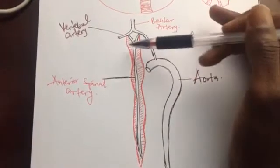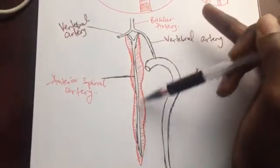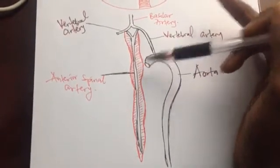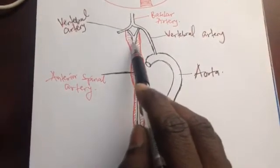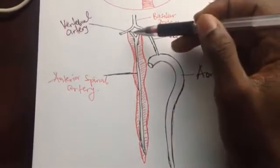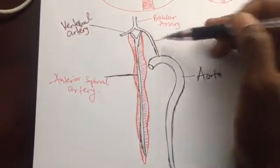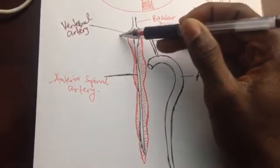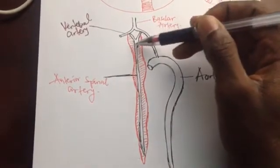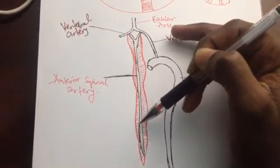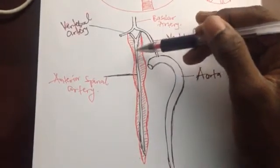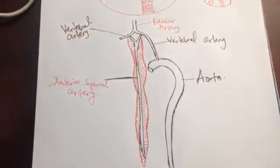Together with the spinal cord — this red structure is the spinal cord — this black structure is the anterior spinal artery. The anterior spinal artery branches out from the vertebral arteries: one branch from the right vertebral artery, another from the left vertebral artery. They fuse to make a long artery called the anterior spinal artery, which runs all the way down the spinal cord.